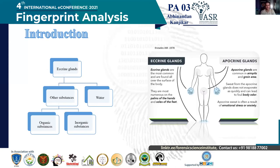The sweat in our body originates from three glands: the eccrine, the apocrine, and the sebaceous gland. Among these, the eccrine gland covers the entire body including the palms of our hands and soles of our feet. This gland produces sweat that contains a variety of chemicals as a result of catabolism and metabolism. It contains organic and inorganic derivatives such as choline, uric acid, creatine, urea, and many other proteins, sugars, and amino acids.